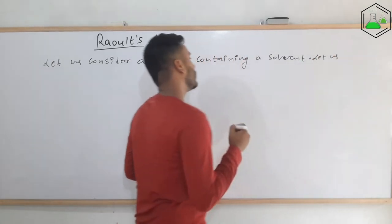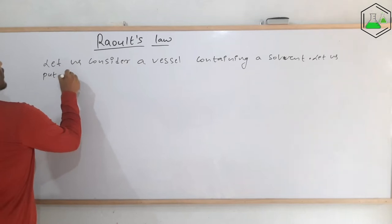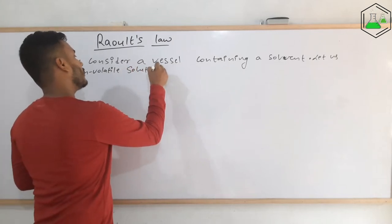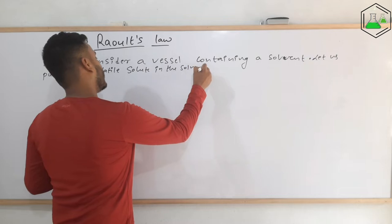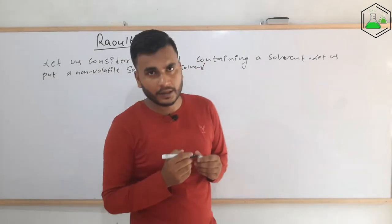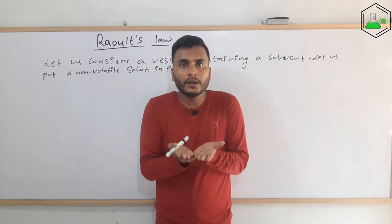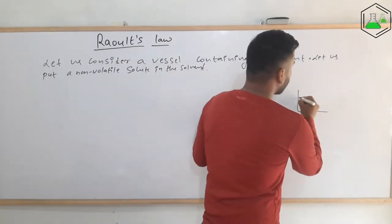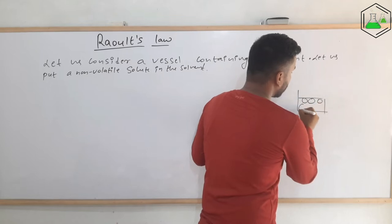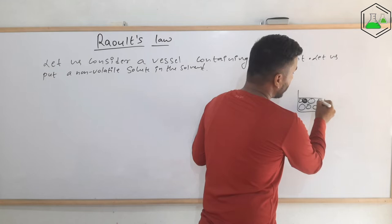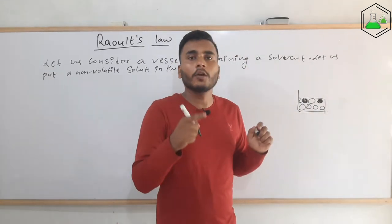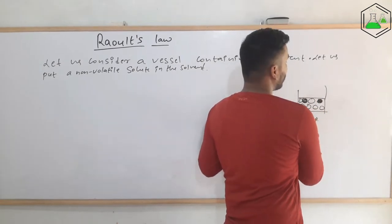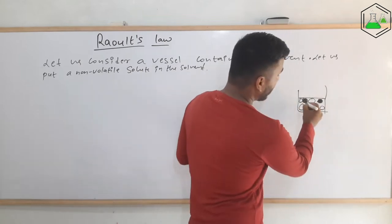Let us put a non-volatile solute in the solvent. Suppose there is a container or vessel in which there is the solvent. If we put a non-volatile solute in it, then the upper portion of the solvent molecules is filled with non-volatile solute. Some of the non-volatile particles will occupy the upper surface. If the temperature is now increased, these black circles — which represent the solute — will try to block all the white circles below them, which represent the solvent.